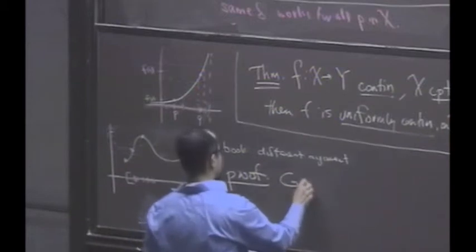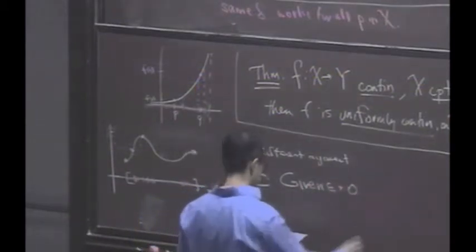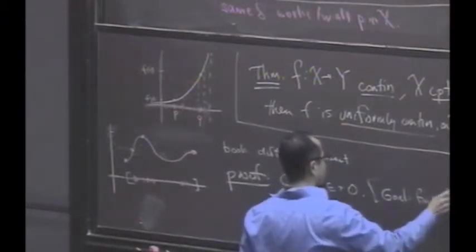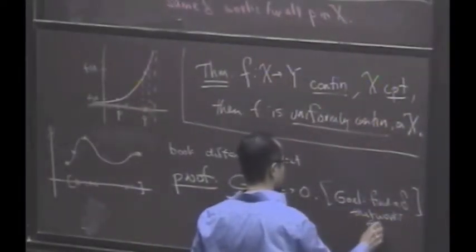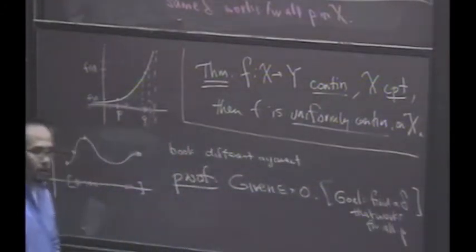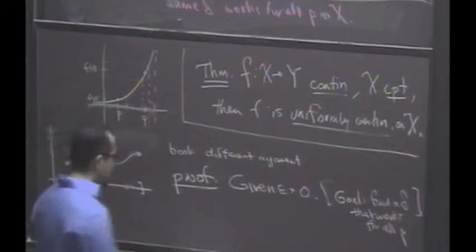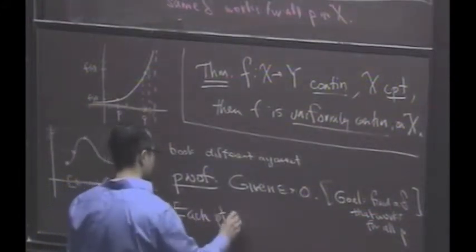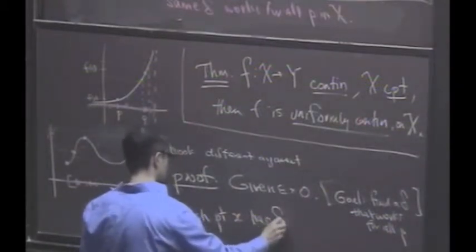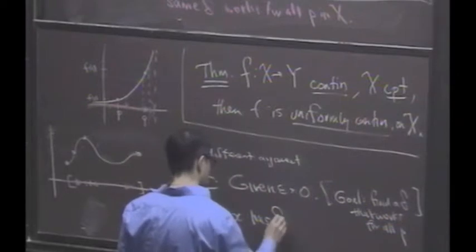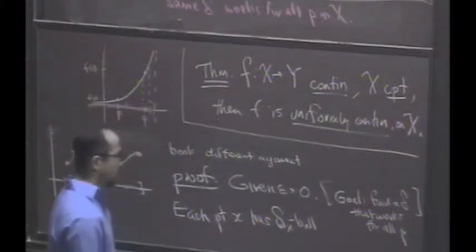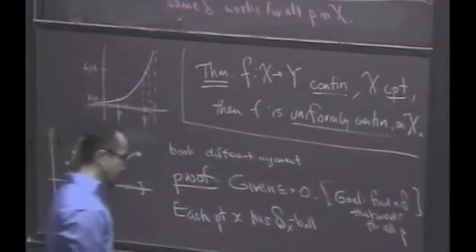So let's suppose we're given an epsilon bigger than 0. And our goal, of course, is to find a delta. And this delta better work for all P, for all points P. So as we noted, each point in this interval, X, has a delta ball. It might depend on X. I'll call it a delta X ball. That satisfies the condition.